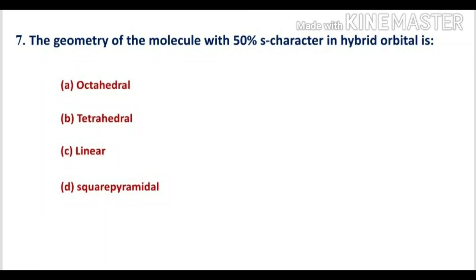Question number 7: the geometry of a molecule with 50% S character in the hybrid orbital. The four options are: A, octahedral; B, tetrahedral; C, linear; D, square pyramidal.